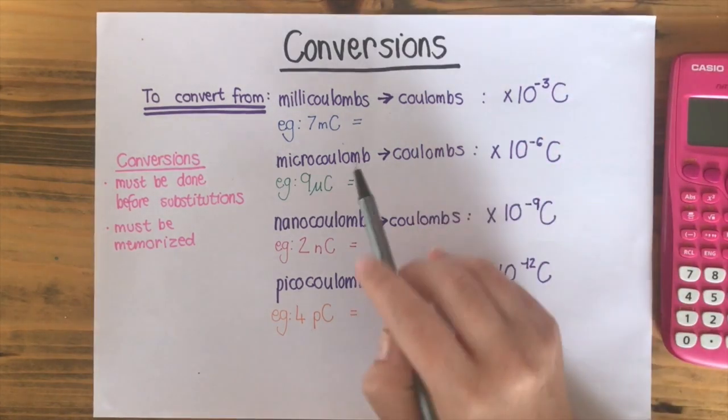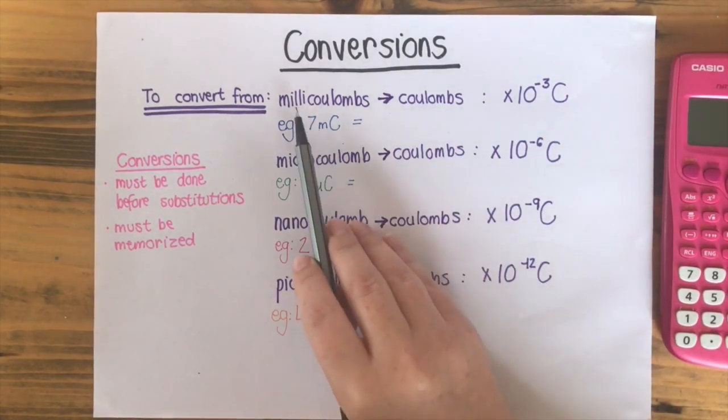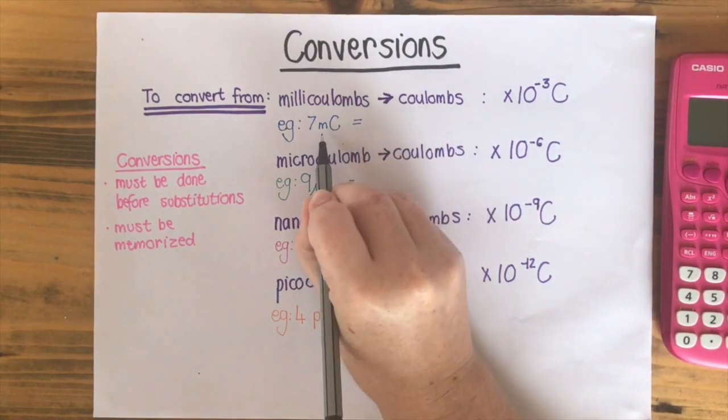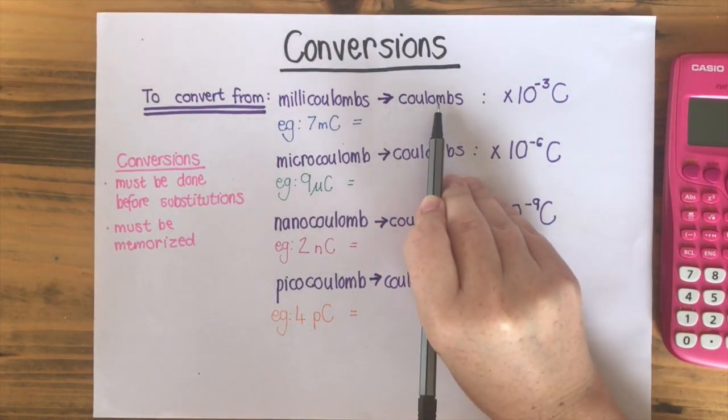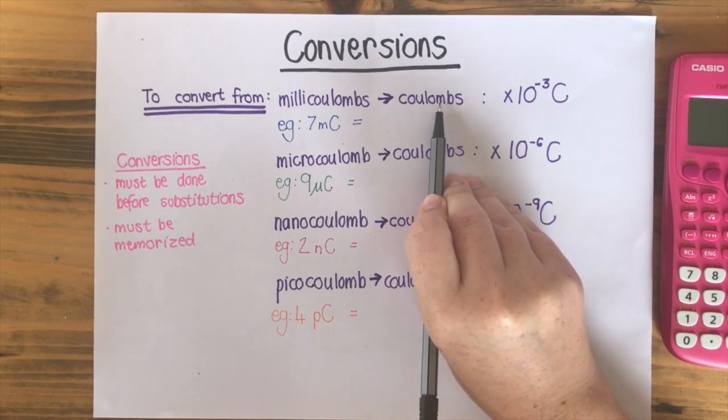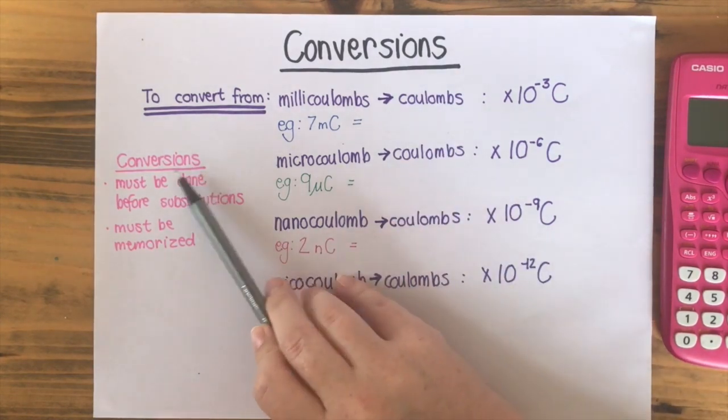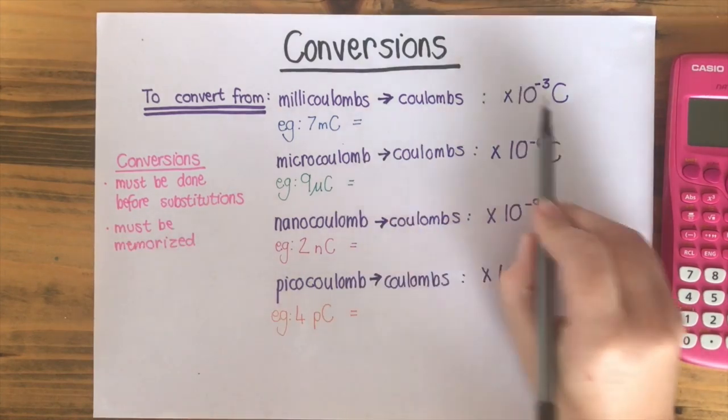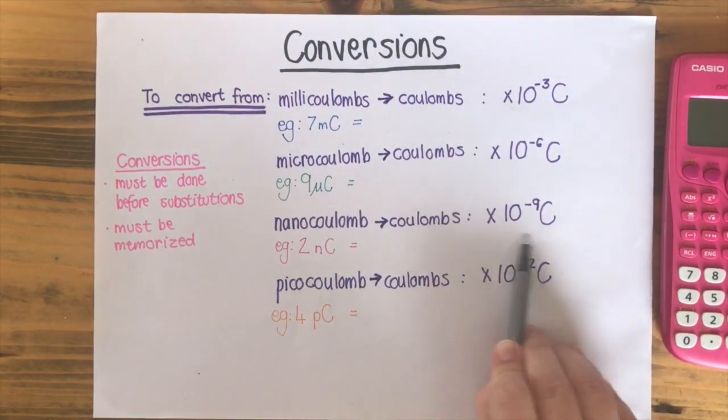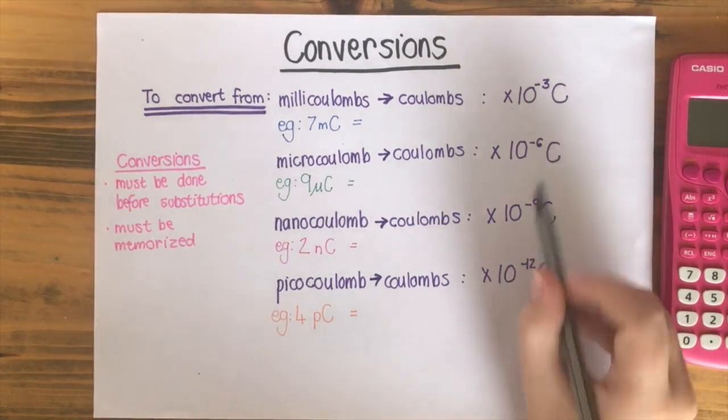For this, whenever you see millicoulombs, it will be shown as a small m and a capital C, you have to convert it to coulombs before doing substitutions. So your conversions must be done before substitutions and you must memorize all of these numbers over here.